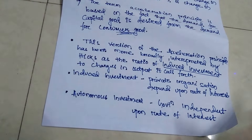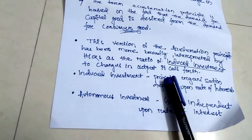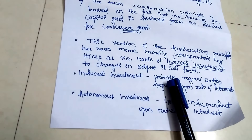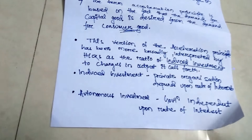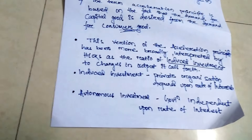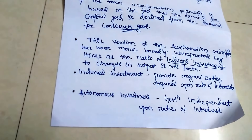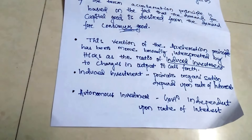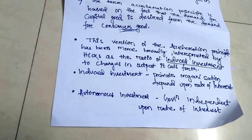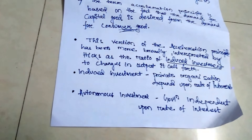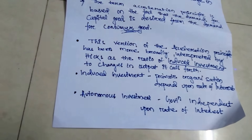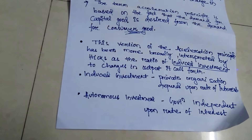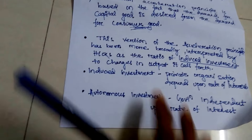The government has to deal with various economic problems. It has the duty to build roads, provide education, health, and every public privilege. So the government does not focus on the rate of interest — whatever the rate of interest may be, the government gives importance to public benefits.